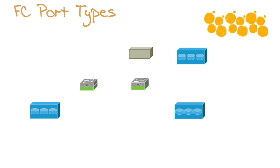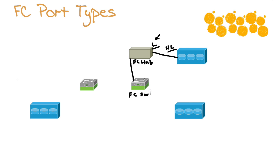Let's review with a diagram to make sure we feel comfortable on fiber channel port types. Here we have a fiber channel hub device. With a connection from this fiber channel hub to a fiber channel storage array, the port on the storage array is an NL port — a node loop port — which connects to the loop port on the fiber channel hub. Without any further connection, that would be a private loop, but we're going to connect that looped topology to a fiber channel switch.